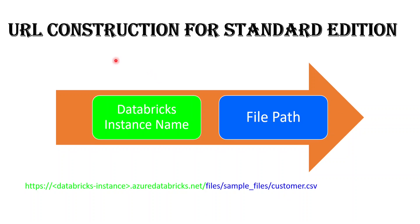Moving to the next one: constructing the URL for Standard Edition. Let's say I have created my Databricks workspace within Azure — Azure Databricks. For that there are two things we need: one is the Databricks instance, and the second is the file path. All Databricks instances start with 'adb' followed by the workspace ID, then a dot, then a two-digit number, then 'azuredatabricks.net'. Based on that base URL, we add 'files' pointing to FileStore, and then the folder or file we want to download. Here we don't need to specify the workspace ID separately because it is already part of the Databricks instance URL.